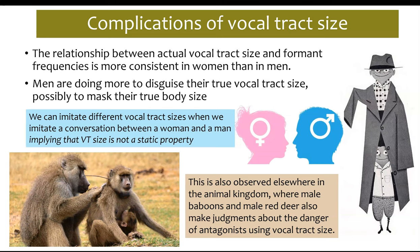Another thing to notice is that you can imitate differences in vocal tract size. For example, when mimicking a conversation between a woman and a man, you can shift your voice to sound like each. That was all from the same voice — obviously exaggerated, but we've all done this. If you're trying to imitate someone with a different vocal tract size, you have a little bit of flexibility to do so.